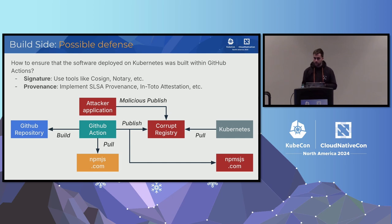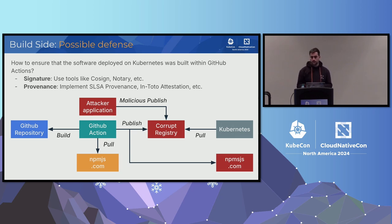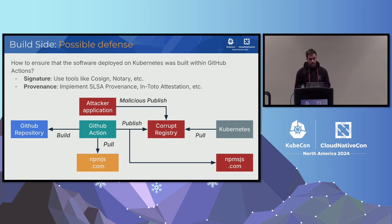On the build side, we want to answer: how to prove that the software deployed on Kubernetes was built within GitHub Actions. We want to do two main things: first, signature — using a tool like cosign or Notary — and second, define a provenance file using a SLSA provenance, in-toto attestation, or other solution. We want to be protected if someone is able to corrupt your registry — for example, getting your npmjs.com account and deploying a new version of your application.